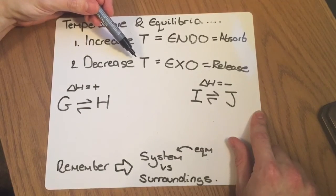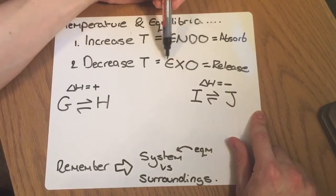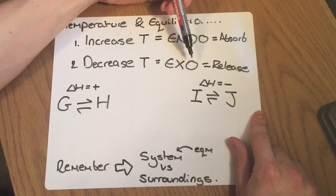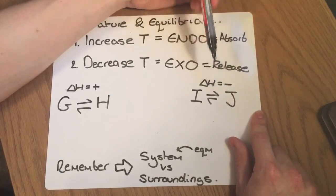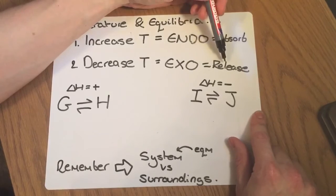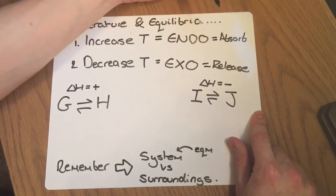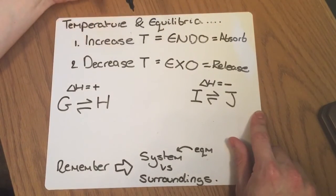If we decrease the temperature, the equilibrium is always going to shift in the exothermic direction. But again, this could be to the left or the right. You're going to have to look in the exam. And this is to release more heat into the surroundings to raise the temperature back up.